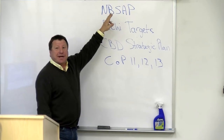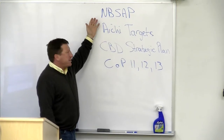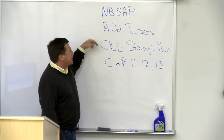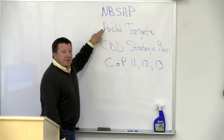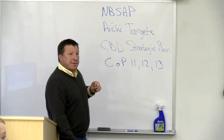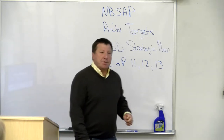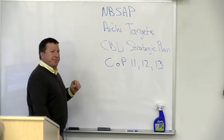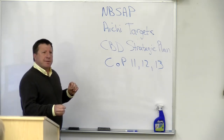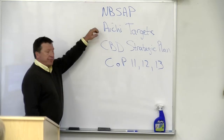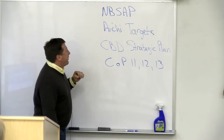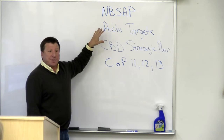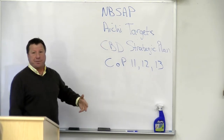National Biodiversity Strategy and Action Plan — each country has one to support their contributions to the Convention on Biological Diversity's Aichi Targets. Countries that didn't sign don't have one. There are 193 signatories to the CBD. Against the Aichi Targets, there are 20 targets in the CBD strategic plan. The 20th one is about resource mobilization, which is shorthand for bringing in money.